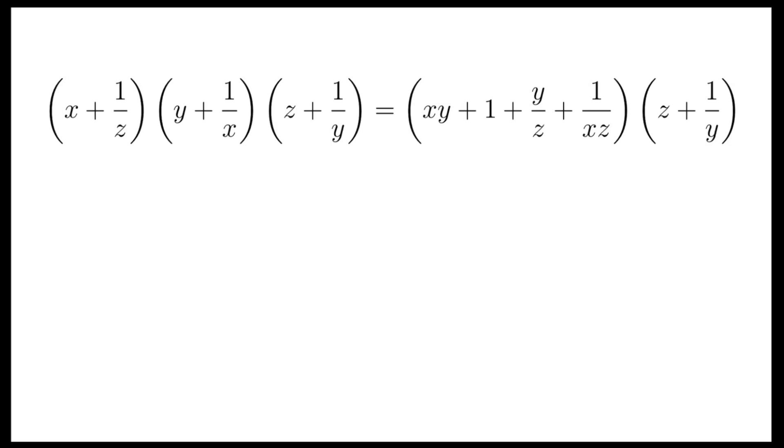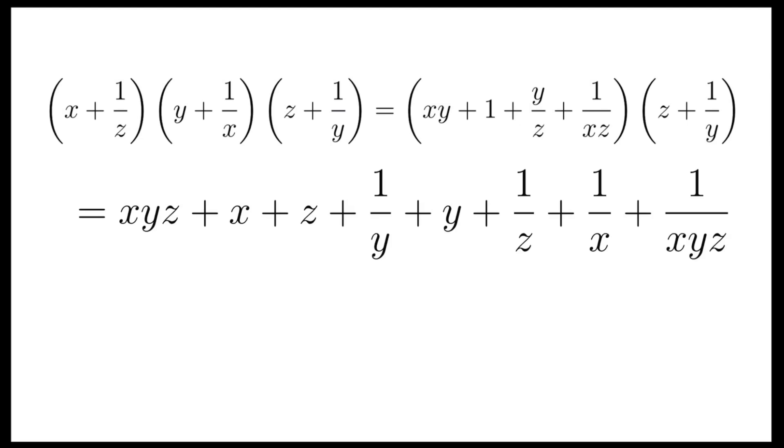The key to solve this problem is to multiply all the related expressions. So we multiply x plus 1 over z by y plus 1 over x, and then multiply the product by z plus 1 over y.